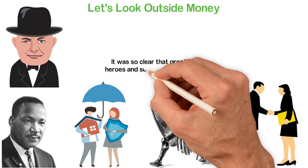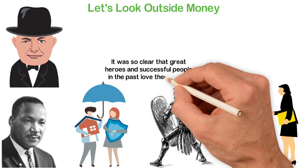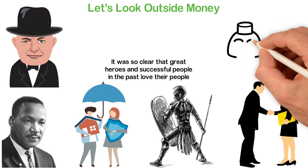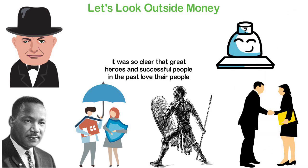We can go on and on to tell stories of great heroes and successful people in the past and it will be clear that these people love their people. If so far, I've been able to convince you that the number one secret to being successful in life is to love other humans, how then can you do it?